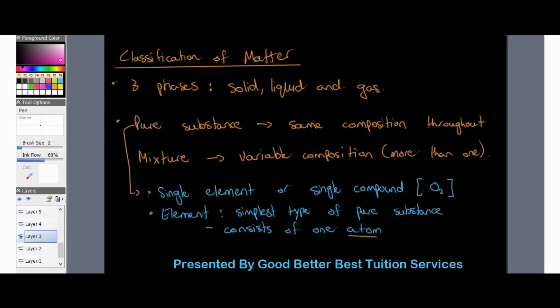Matter comes in three different phases: solid, liquid, and gas. In Grade 10 we also look at what is known as a pure substance. A pure substance is a substance that has the same composition throughout all three phases of matter — it remains the same no matter what happens.